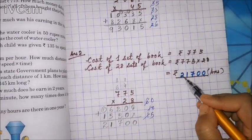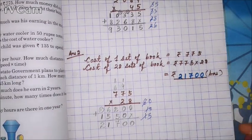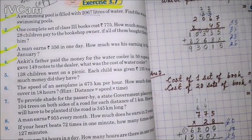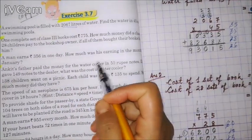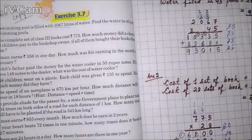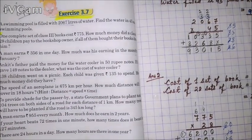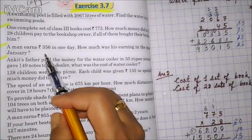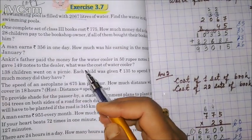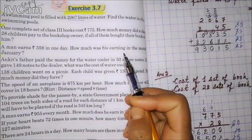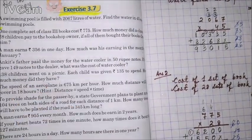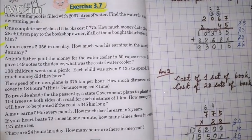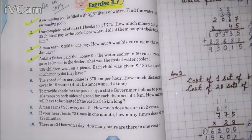Add the two partial products: the answer is 21,700 rupees. Write: cost of 28 sets = 21,700 rupees. Now question number 3: a man earns 356 rupees in one day. How much was his earning in the month of January? Earning means income — he gets 356 rupees per day.